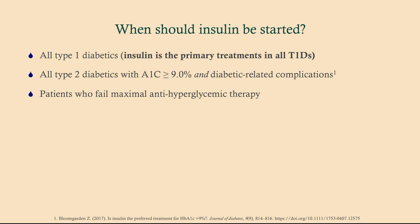So when do we start insulin in diabetes? We start insulin in all type one diabetics. These are people whose pancreas is just fried from an immune response, so these patients don't make insulin and they always need insulin. This used to be called insulin-dependent diabetes mellitus. Insulin is the primary treatment for all type one diabetics — we will never put a type one diabetic on metformin, thiazolidinediones, SGLT2 inhibitors, or anything like that.